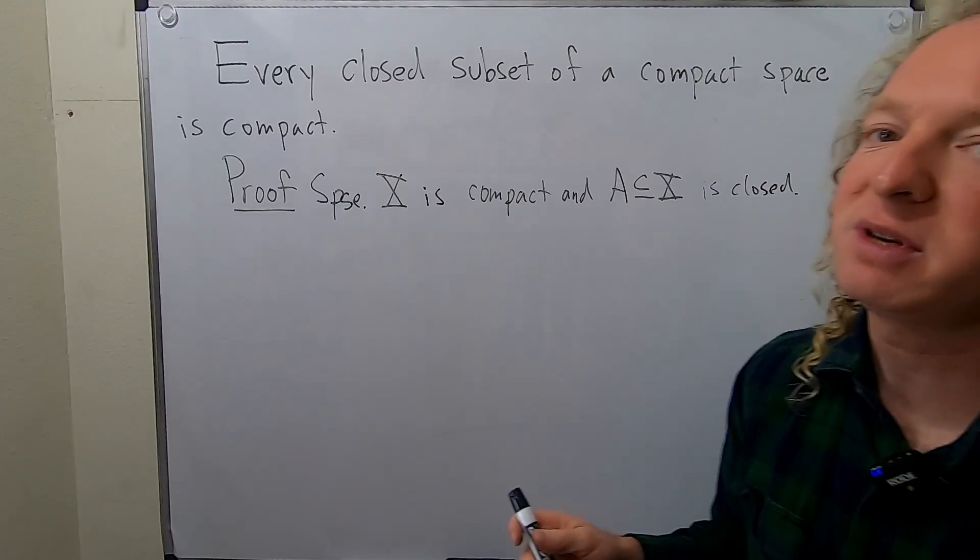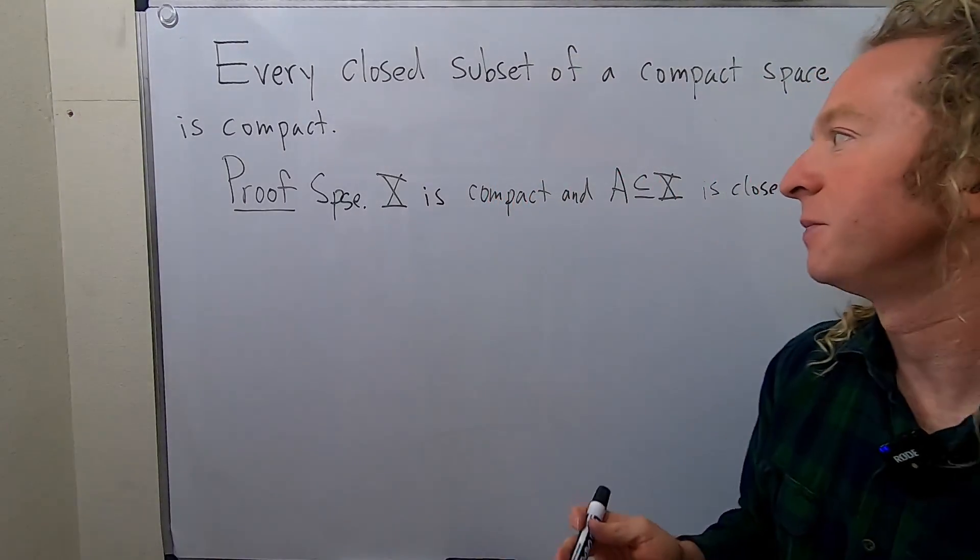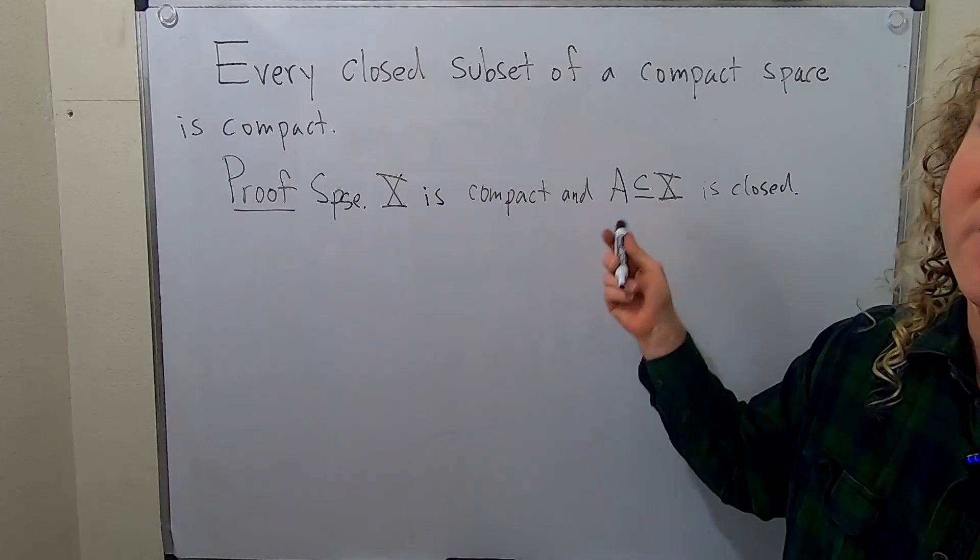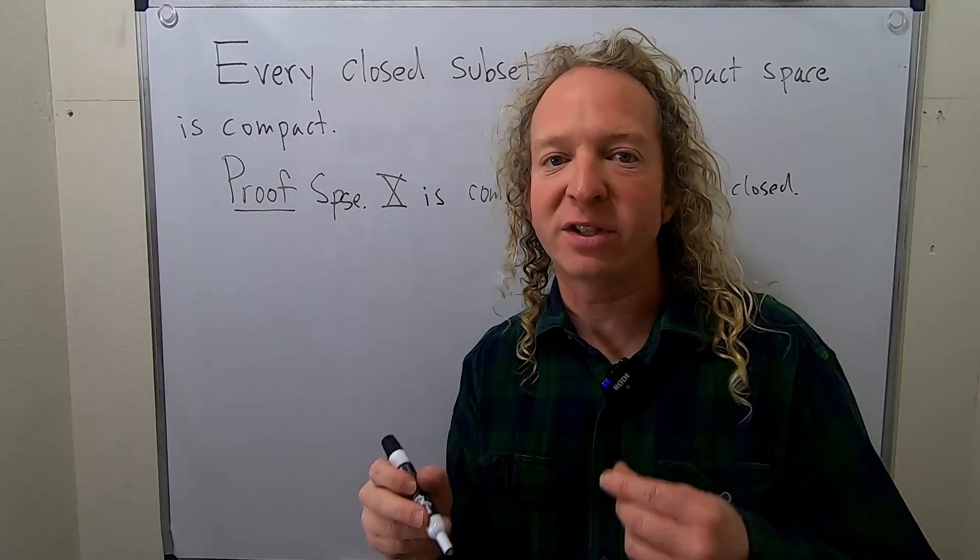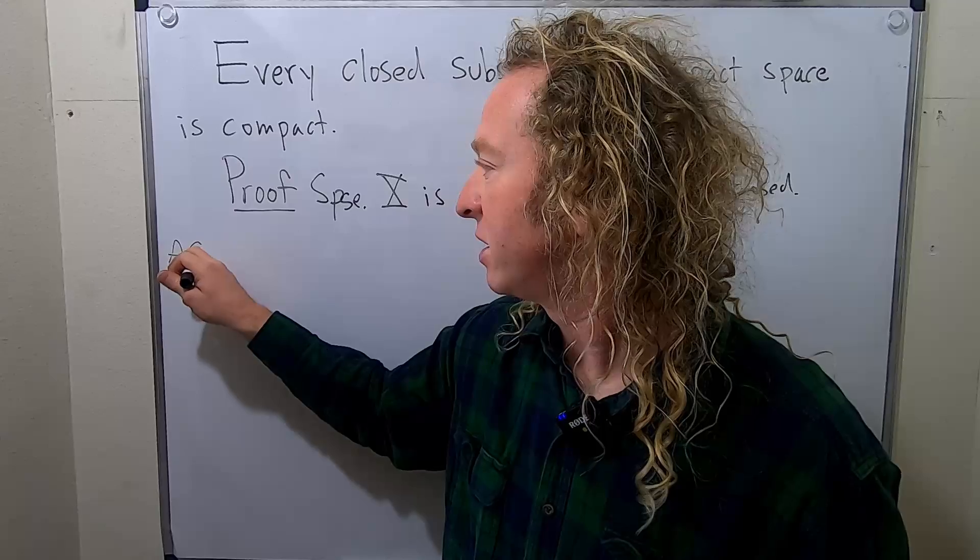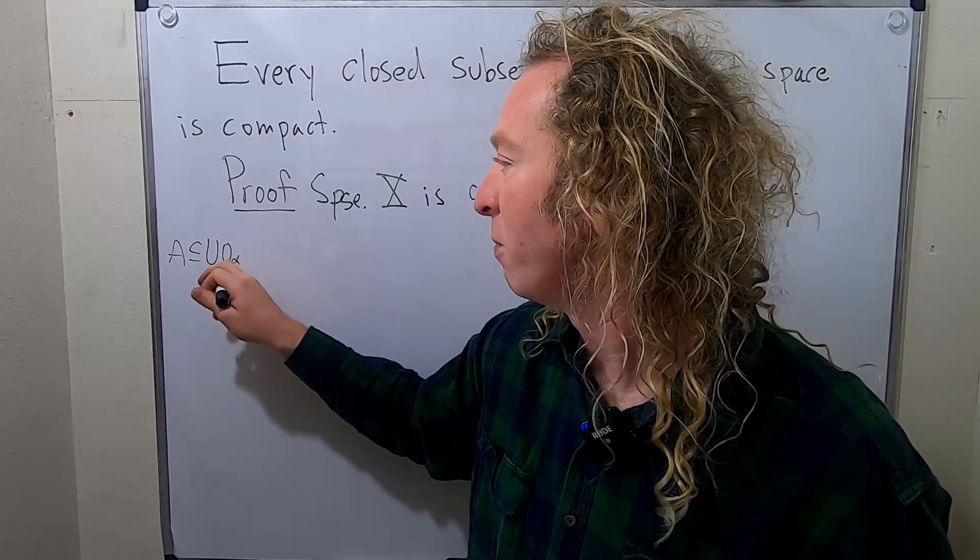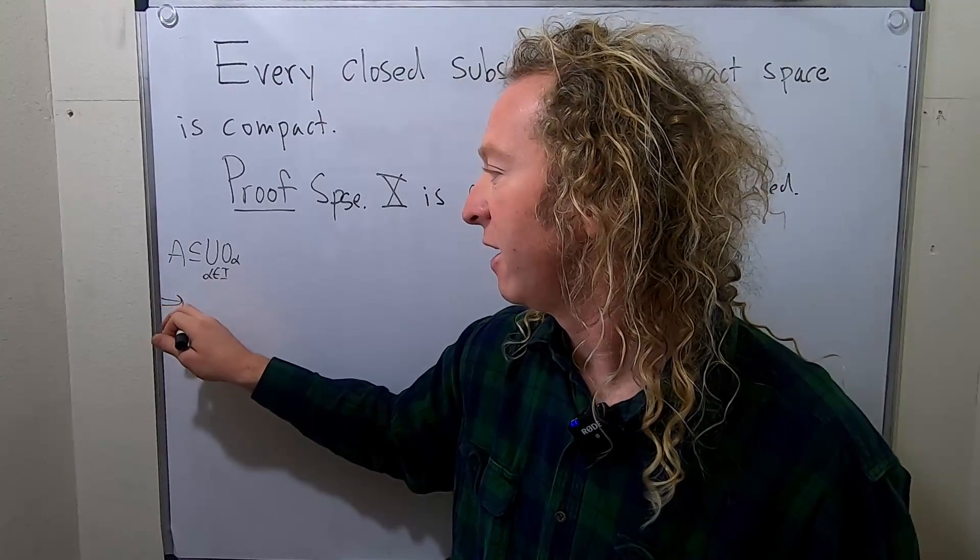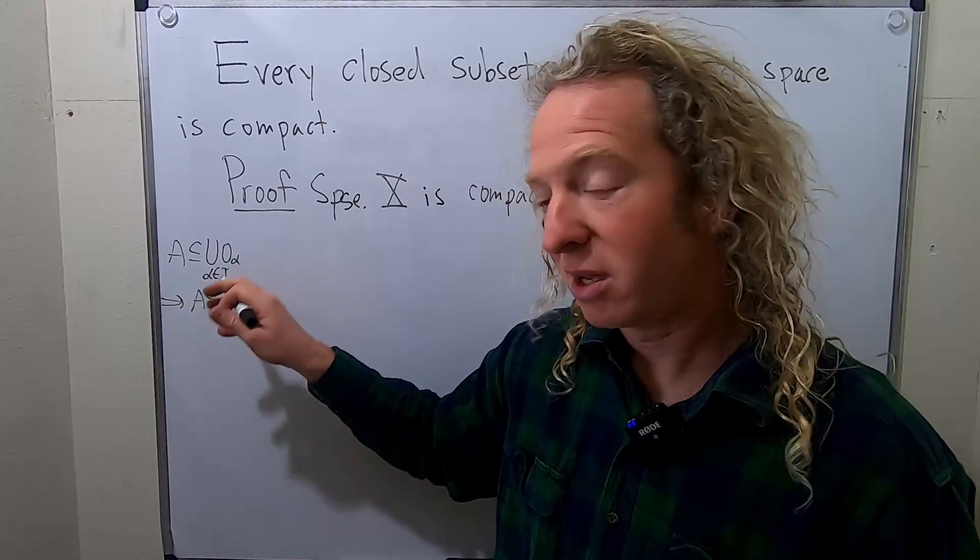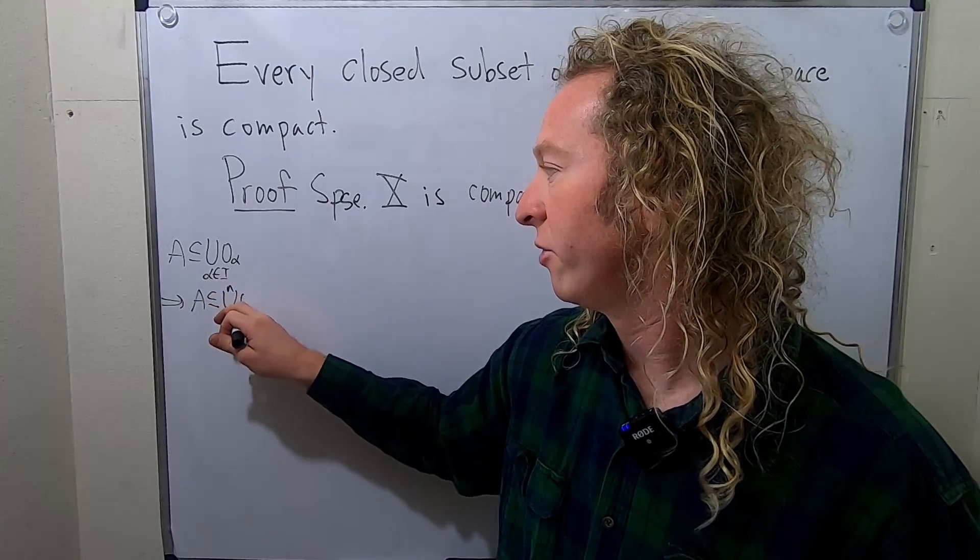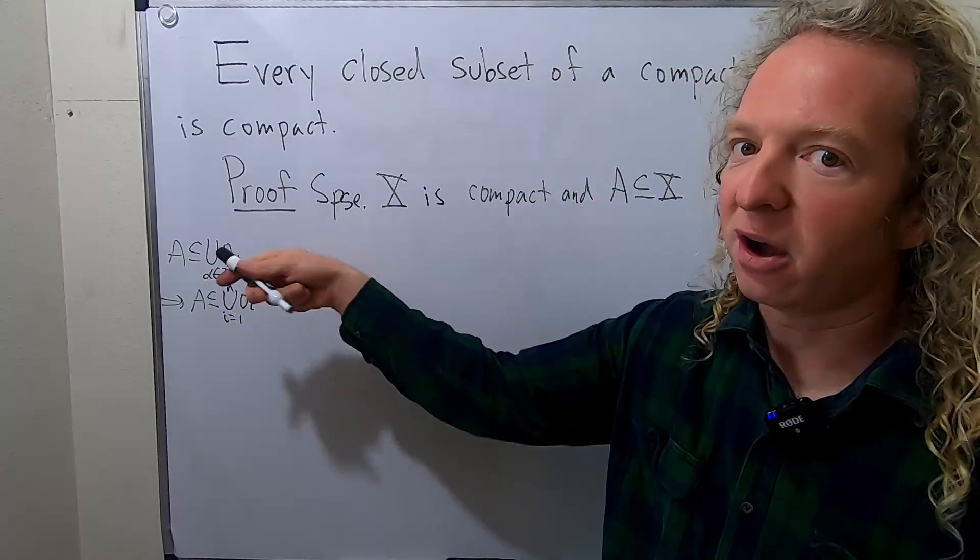And we have to show it's compact. What does it mean for a set to be compact? Well, it means that whenever you have an open covering of A, you can find a finite sub-covering of A. So whenever A is a subset of the union of some open sets, then you can find a finite number of those sets such that this condition is still true. So you can cover it with finitely many of those open sets.